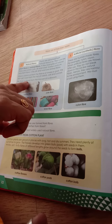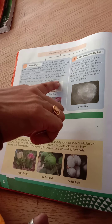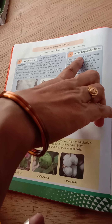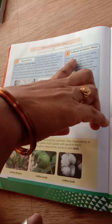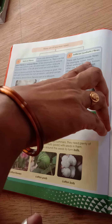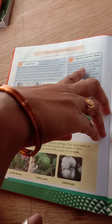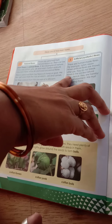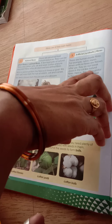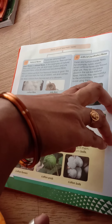Silk fiber is drawn from the cocoon of a silkworm. Artificial or synthetic fibers are human-made fibers — for example, nylon and rayon. When artificial fibers are thrown away after use, they do not break down in the soil like natural fibers. Hence they are harmful to the environment, and we must avoid using them.